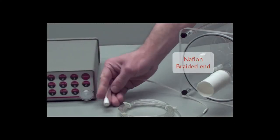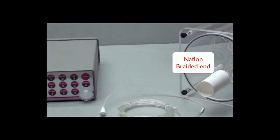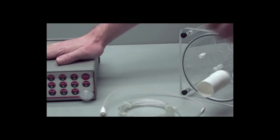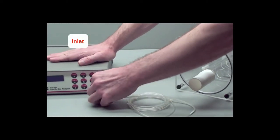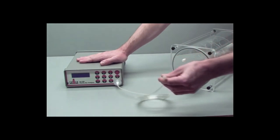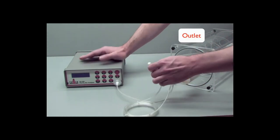Next take the clear Nafion tubing, and take the braided end, and that goes to the front inlet of the gas analyzer. The other end then goes to the outlet of the mixing chamber.